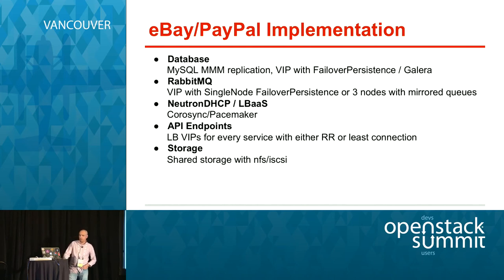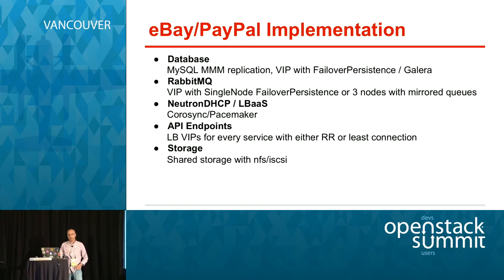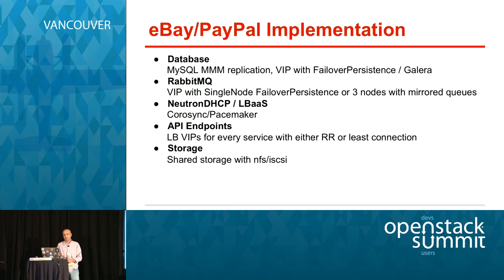For RabbitMQ, we have changed solutions a couple of times. Currently we're using RabbitMQ behind a VIP with a single node, with persistence failover. We also have implementations with three nodes and mirrored queues, and we are trying to move toward that direction — three nodes with mirrored queues behind a VIP with a persistent connection.